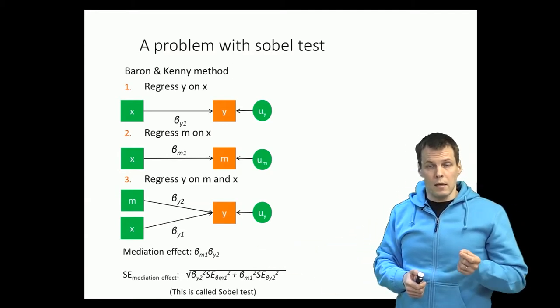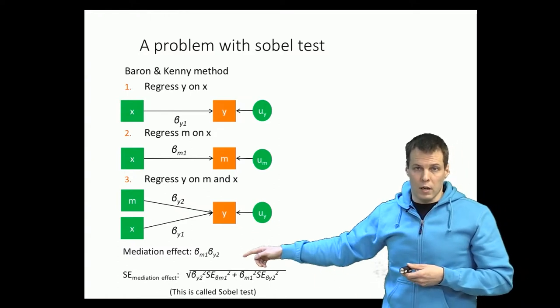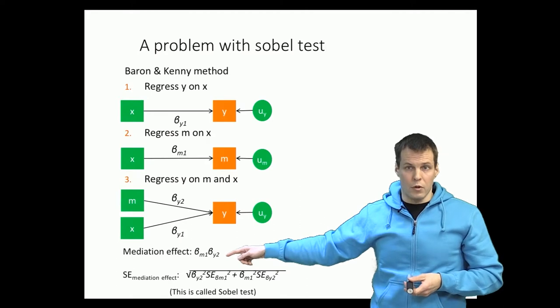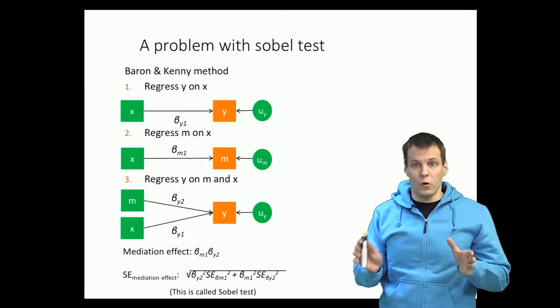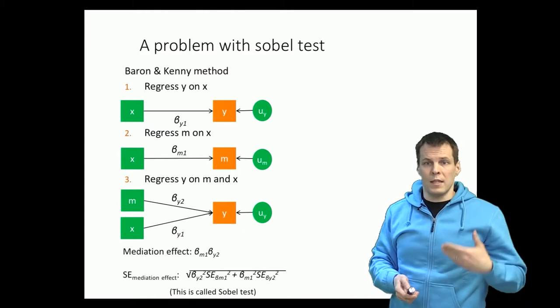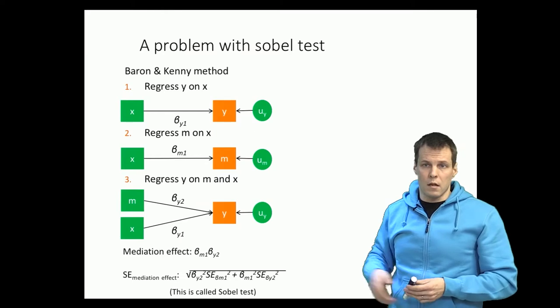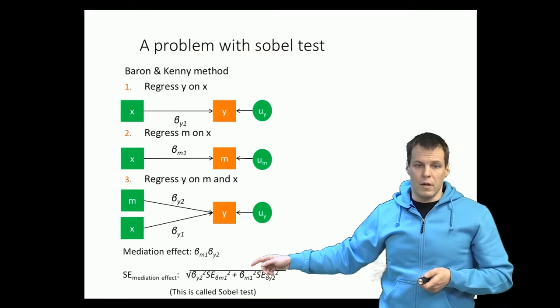That approach has another problem and the problem is again that this product can't be assumed to be normally distributed because the product of two normally distributed variables is not normal. So some people say that's a severe problem and it is. In small samples, using this approach can be misleading.